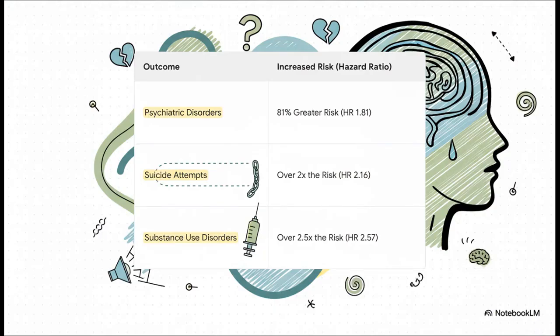And remember, this is after they did all that statistical work to account for pre-existing conditions. Even with that adjustment, the study found a significantly greater associated risk for all three of the severe outcomes they were tracking. We're talking about an 81% greater risk for psychiatric disorders, more than double the risk for suicide attempts, and over two and a half times the risk for substance use disorders.